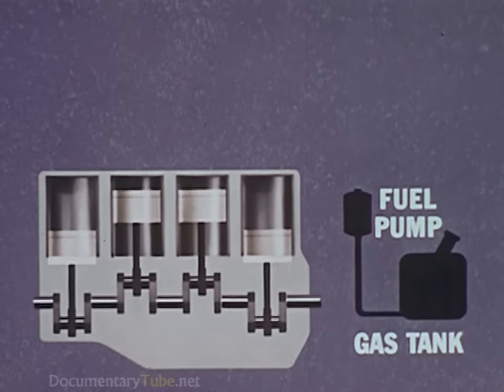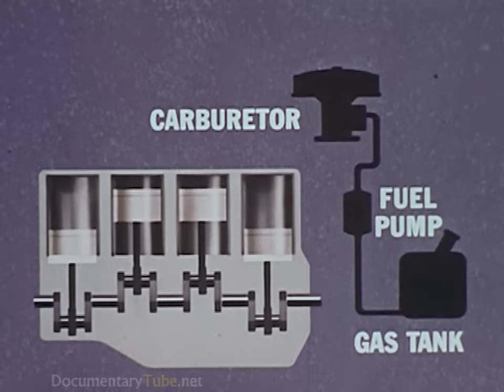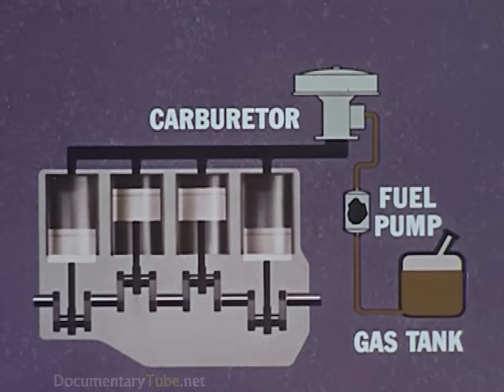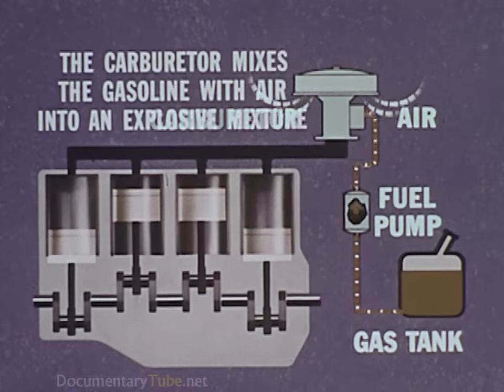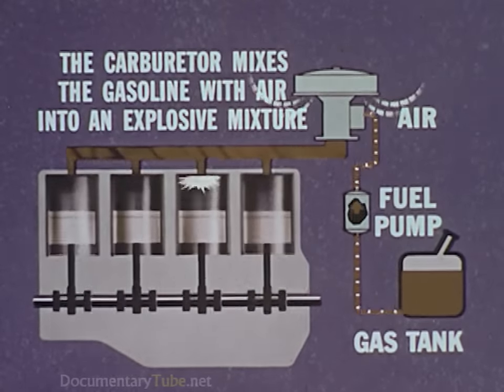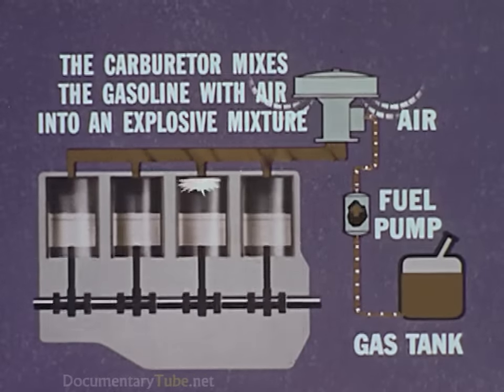Gasoline from the tank is pumped by the fuel pump to the engine's carburetor through the fuel lines. The carburetor mixes the gasoline with air to form the explosive mixture that drives the pistons.